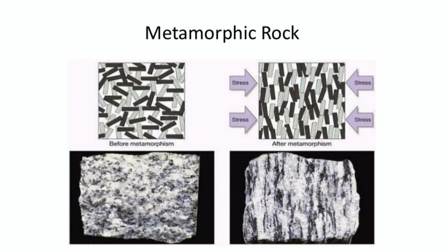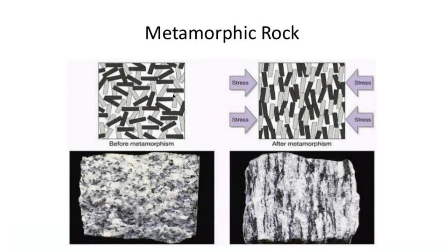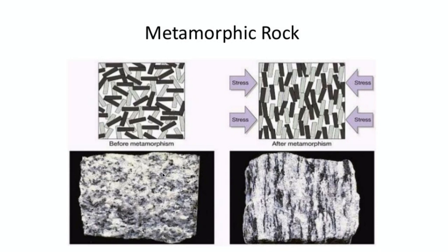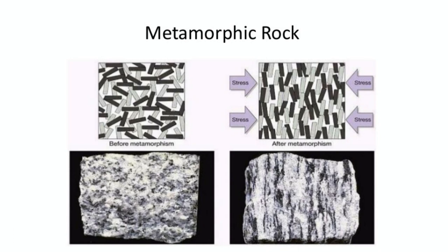Foliated has stripes. Here we have an igneous rock — this is kind of what the mineral grains look like beforehand: scattered, pointing every which way. Then a lot of stress, heat, and pressure is going to squeeze the rock, turning all these mineral grains that are facing every which way to all more or less orient the same way. They're all going to be more or less parallel, and that's going to cause the mineral grains to have a stripy effect. So this igneous rock became foliated metamorphic rock after heat and pressure.